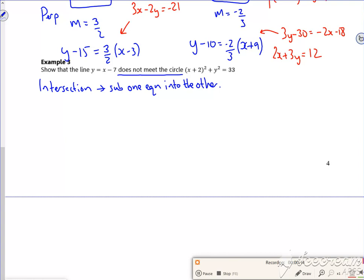So I'm going to replace the y with an x minus seven. So I've got x plus two squared plus x minus seven squared is equal to 33. So this is my starting point, so let's see where we get to.